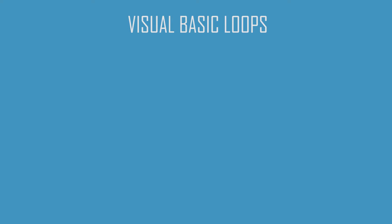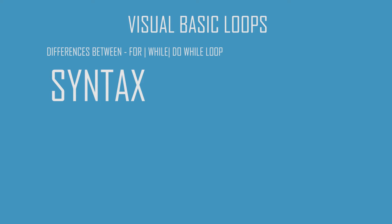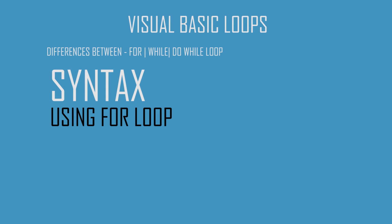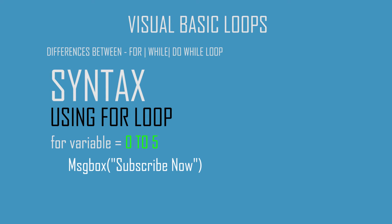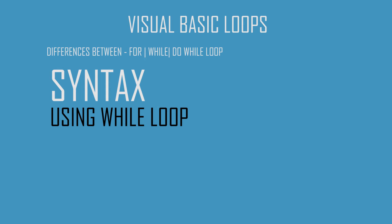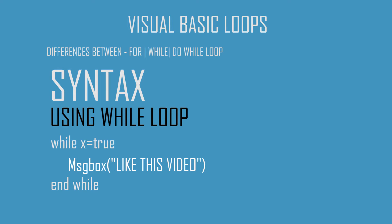The first difference is syntax. When using the for loop, you have to write 'for' then any integer, then the first counter to the last counter — here you define how many times the inner statement is going to repeat — and it ends with 'next'. When using the while loop, you have to write 'while' then the condition, and it ends with 'end while'.